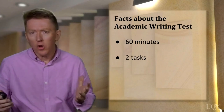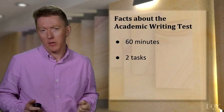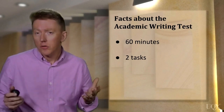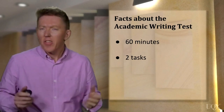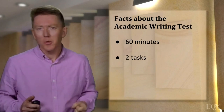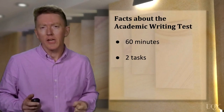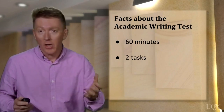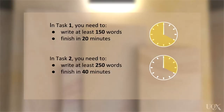The two tasks are not linked in terms of topic — in other words, they will be about different things. There's a lot to do in 60 minutes, and it's a good idea if you can organise your time like this. In task 1, you need to write at least 150 words, and we usually recommend that you finish in 20 minutes.